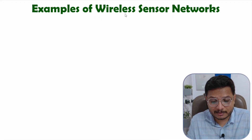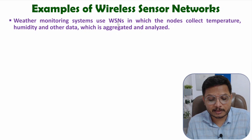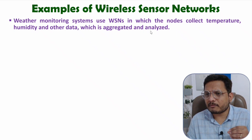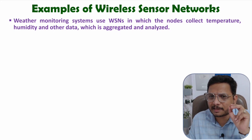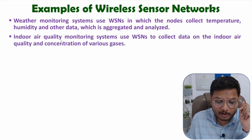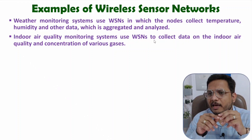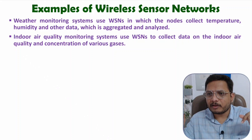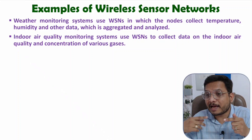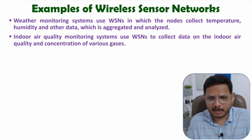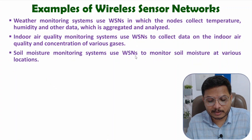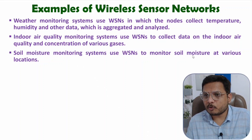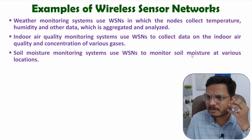Now let me give you some examples of wireless sensor network. A weather monitoring system uses WSN in which we are collecting weather data like temperature and humidity, we aggregate and analyze it, and with the use of application and analysis, users can have many applications. In an indoor air quality monitoring system, we have multiple end nodes in a particular hall or room — at different locations of that room, we can monitor what is the air quality. We can also measure different concentrations of various gases. A soil moisture monitoring system also uses WSN, where we are monitoring soil moisture at various locations, along with temperature and many other parameters.